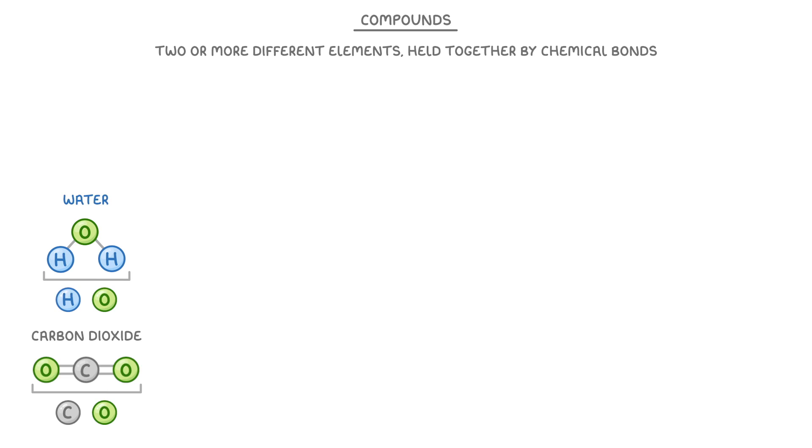Another key feature of compounds is that the elements involved are always found in the same proportions. For example, water always has two hydrogen atoms and one oxygen atom. This allows us to write formulas for them using their chemical symbols and the numbers of each atom.